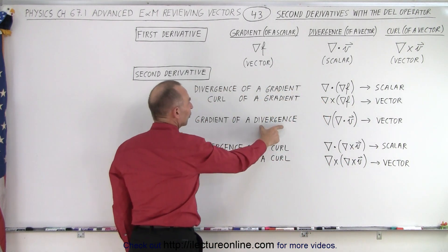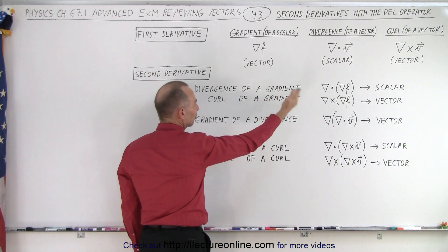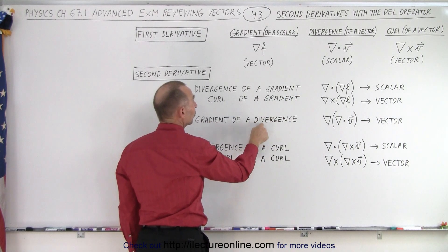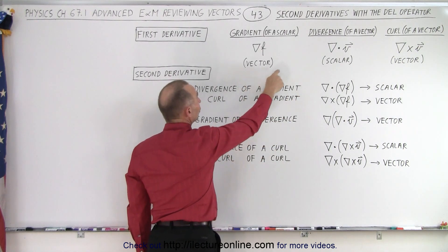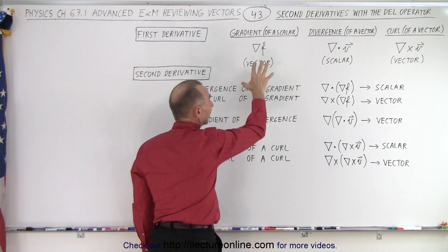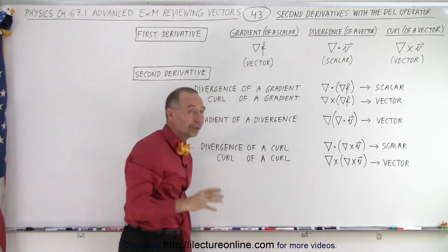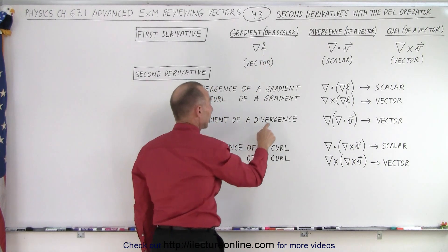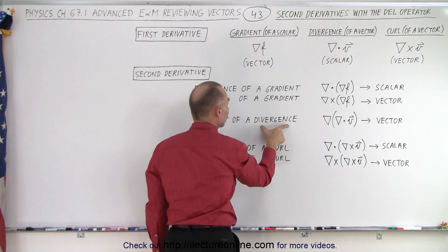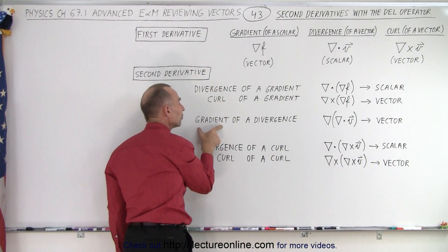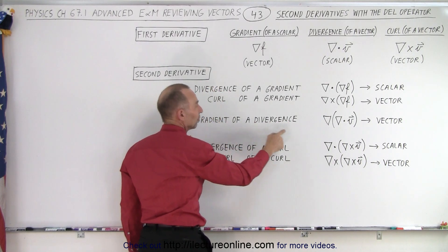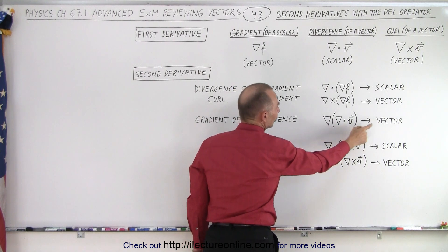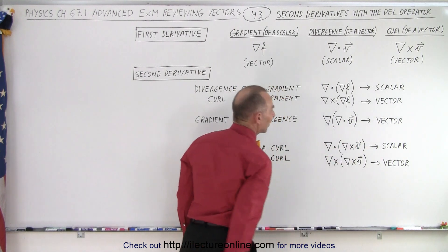So if you did a divergence, you end up with a scalar, and you can take the gradient of a divergence, because you can only do a gradient with a scalar — you can't do a divergence or a curl with a scalar. So if you have a scalar from a divergence, you can then do the gradient of the divergence, and it looks like this — the gradient of the divergence, which gives you a vector.